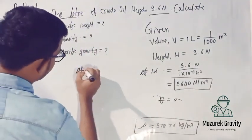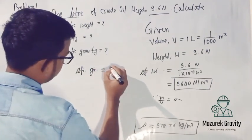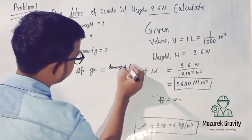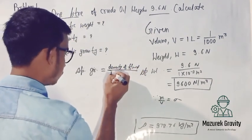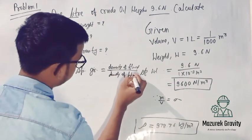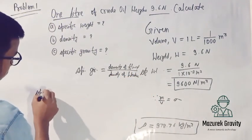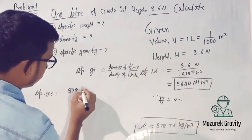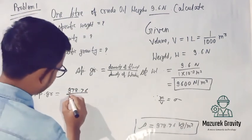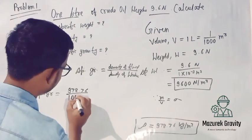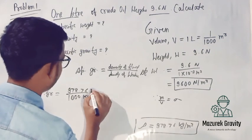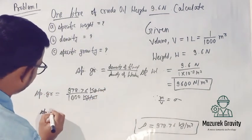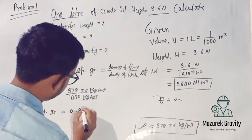Now for specific gravity: it is defined as density of the oil over density of water. The density of the oil is 978.76, and the density of water is 1000 kg per meter cube. So specific gravity equals 0.978.